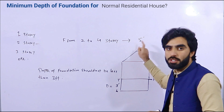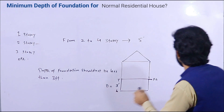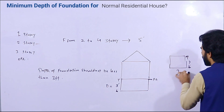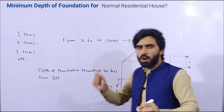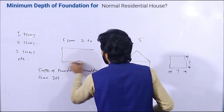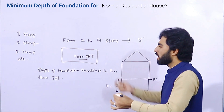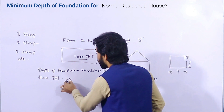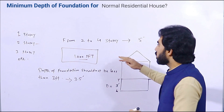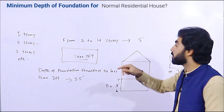I recommend from two to four story normal house the depth should not be less than five feet. If you are using footing design, you need proper design — including the size of footing on each side. That is another topic. For one story with a plot size of about 1000 square feet, it should not be less than three feet, but I recommend trying to use three-and-a-half feet. For two to four story, it should not be less than five feet, but you can increase it.